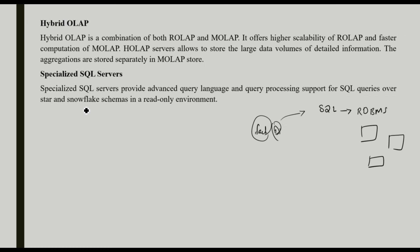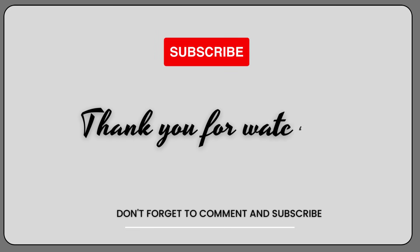We have Star Schema and Snowflake Schema. Star Schema and Snowflake Schema are not available in a normal normalized database structure with primary key and foreign key. So, based on our Specialized SQL Server, we have to use a specific schema. We have to use a Specialized SQL Server in a read-only environment with a database like Star Schema and a data warehouse. Hope it is clear now. Thank you for watching.